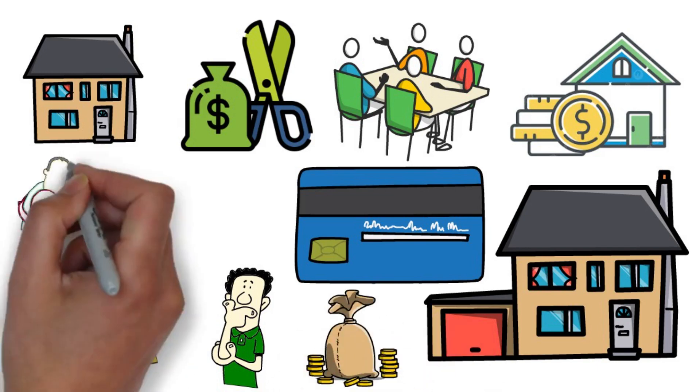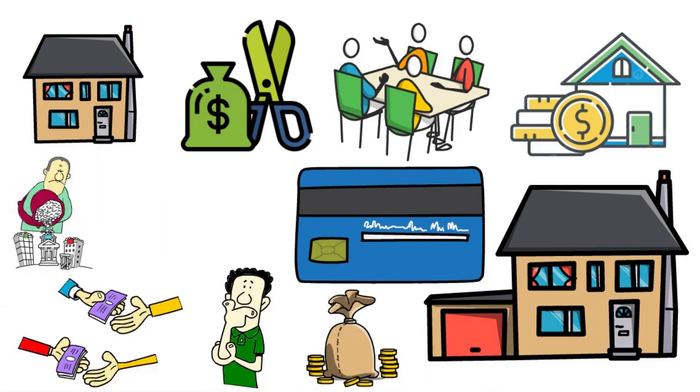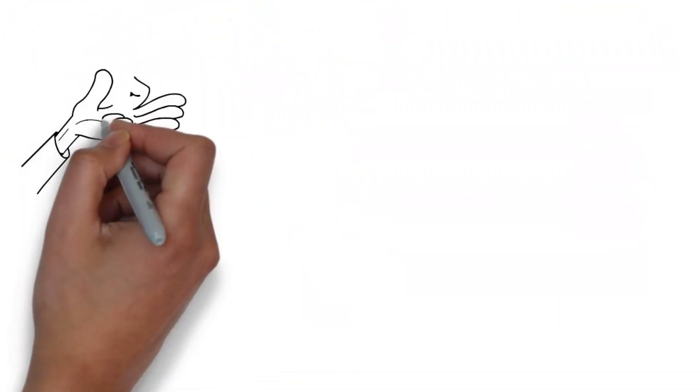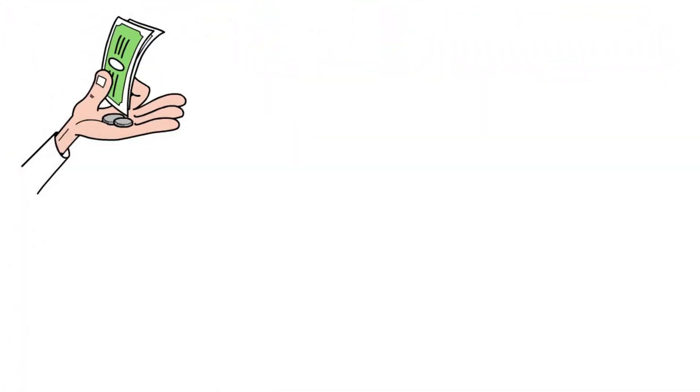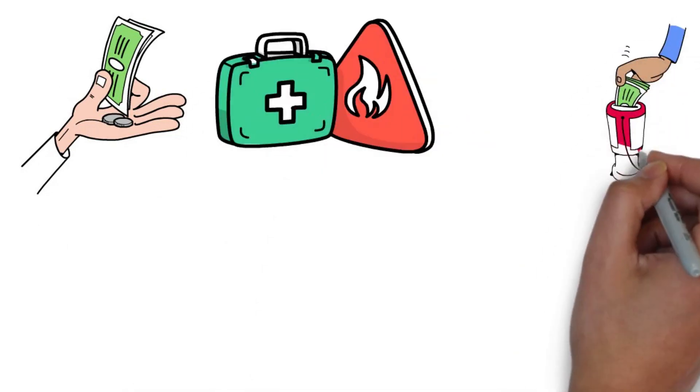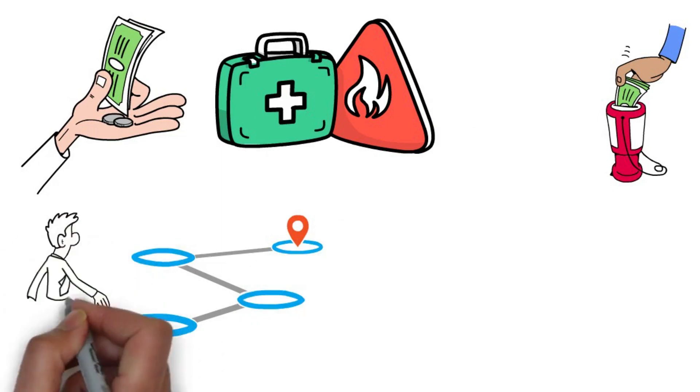Moving on to building emergency savings. Living paycheck to paycheck is risky business. A sudden expense can send you into a tailspin if you don't have a safety net. Building up an emergency savings fund can help you weather any storm that comes your way.